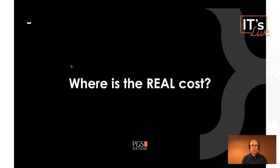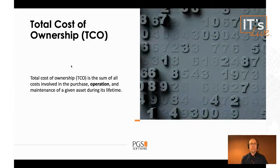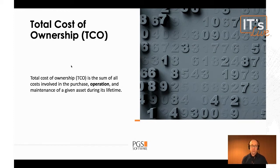So where is the real cost in the cloud? We usually speak about total cost of ownership. TCO means the sum of all costs involved — not just the cloud resources themselves. It's the sum of all costs involved in the purchase, operation, and maintenance of a given asset during its lifetime. This means we're expanding this definition not only to provisioned cloud resources, but also to the workloads you want to run on the cloud.